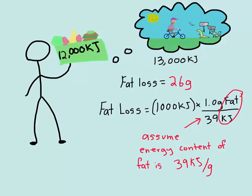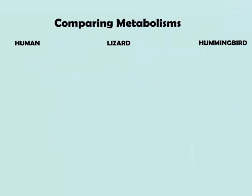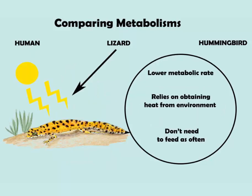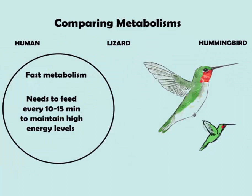Now let's compare the metabolisms of a human, a reptile, and a hummingbird. Metabolisms vary across species. Humans usually consume many meals a day, and often too much food ends up going into storage. The amount of calories we need depends on our physical activity level. Compare this to a lizard, who has a lower metabolic rate and doesn't need to feed as often. Reptiles rely on heat from their environment to get heat and energy — they're literally solar powered. A hummingbird needs to feed about every 10 minutes to maintain its high energy levels in order to fly around like a tiny helicopter. But if the hummingbird was as big as a human, it would need to consume a huge amount of food to sustain itself. This comparison shows that metabolic rate relies not only on the amount of food consumption, but also on lifestyle.